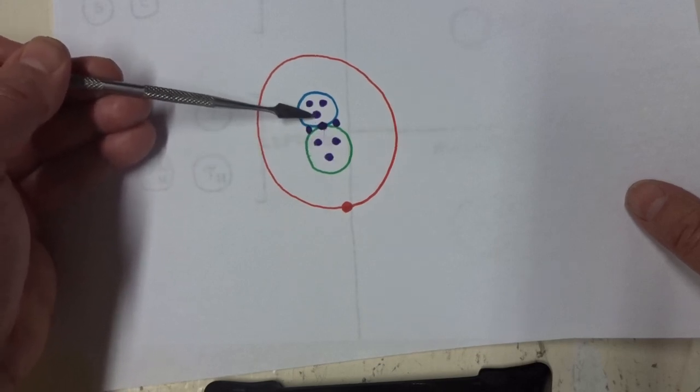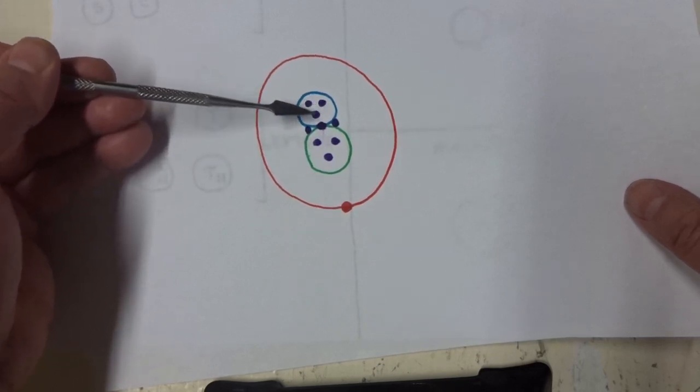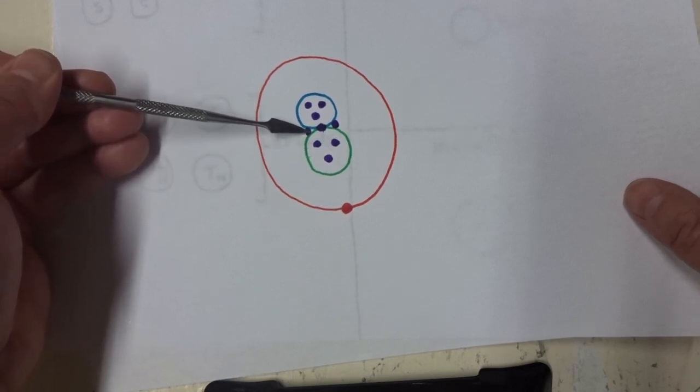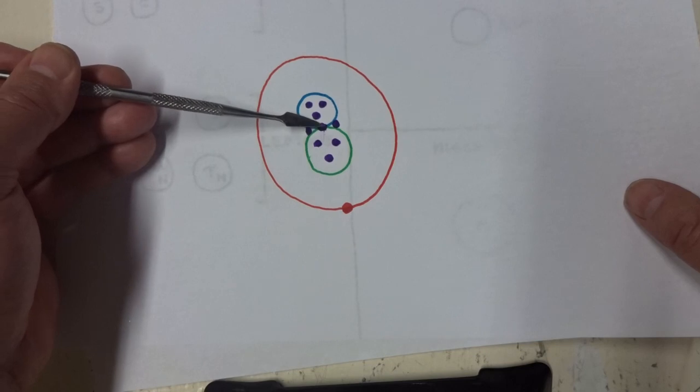So there's gluons in the proton and gluons in the neutrons. And gluons holding the neutrons and protons together.